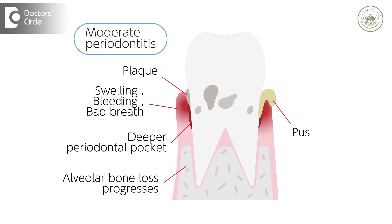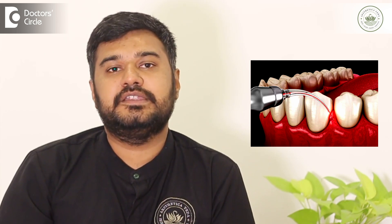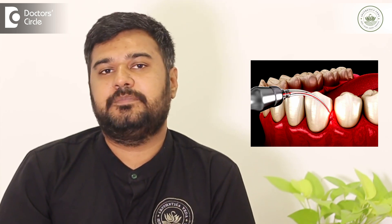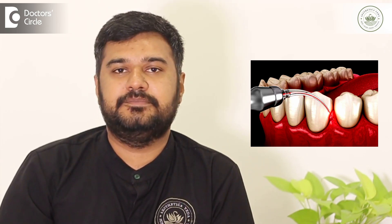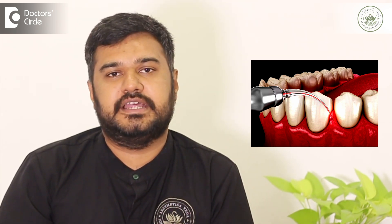In case of periodontitis, the microorganisms are present deep inside what is called a periodontal pocket. Lasers are used to vaporize the unhealthy gum tissue and cauterize the incision at the same time. They also kill the microorganisms which are present in the deep pockets.